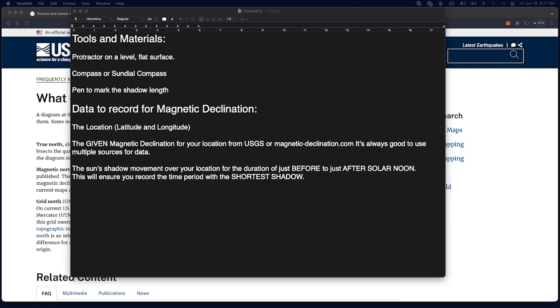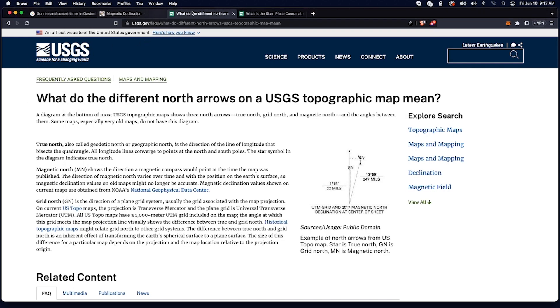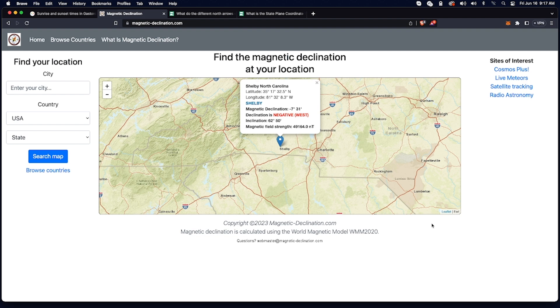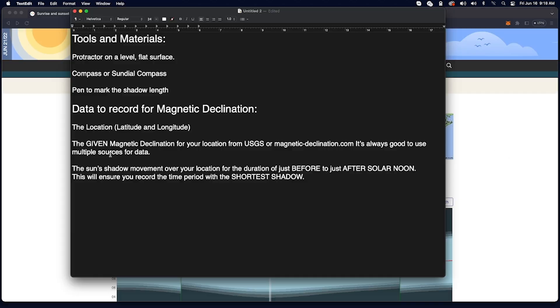You want to go and find the given magnetic declination for your location from USGS or you can go to magnetic-declination.com, which is right here, is what it looks like. You put in your location and it tells you what your magnetic declination is. If you can find it from multiple places, that's good. It's always good to use multiple sources for data. The other thing you need to record is the sun's shadow movement over your location for the duration of just before to just after solar noon. This will ensure that you record the time period with the shortest shadow.